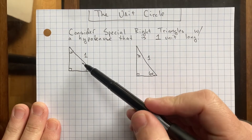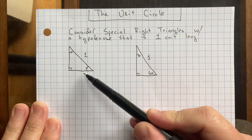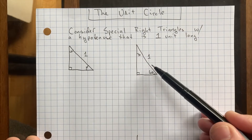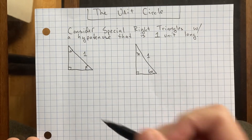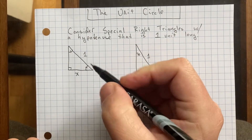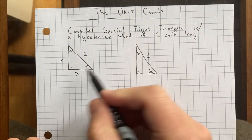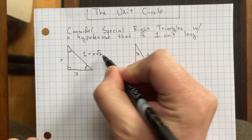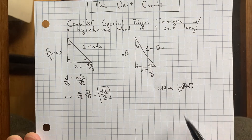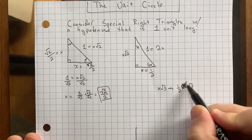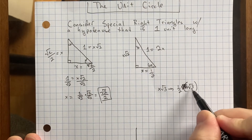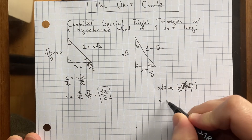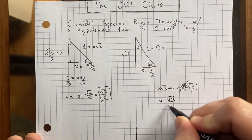Consider these two different special right triangles: the 45-45-90 and the 30-60-90. But the hypotenuse is one unit in length. So could we solve for the other sides? Remember that in the 45-45-90, both legs are x, and the hypotenuse is x times the square root of 2. I want to represent the two sides in terms of x. Since the hypotenuse is 1, we get: 1 equals x times the square root of 2.